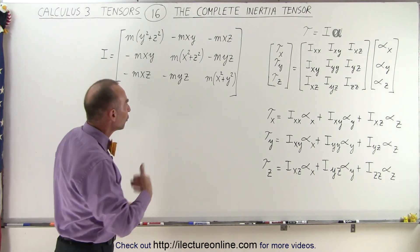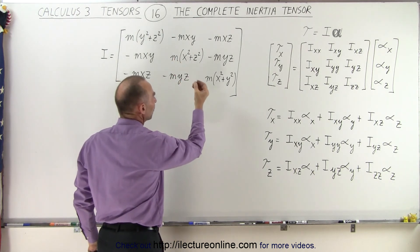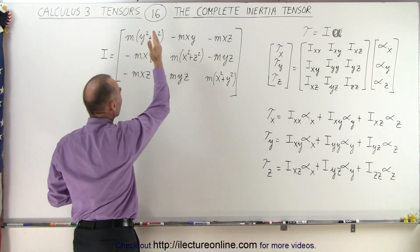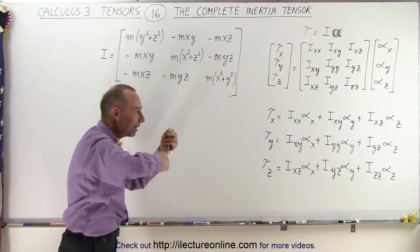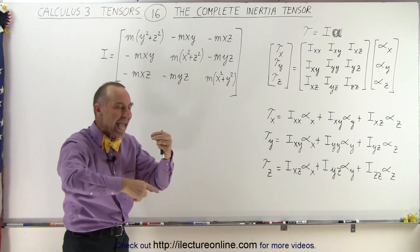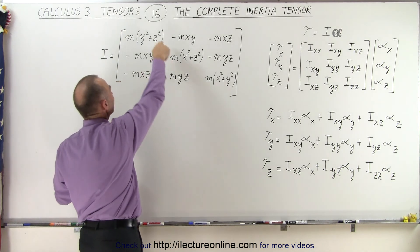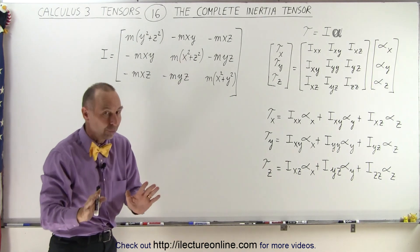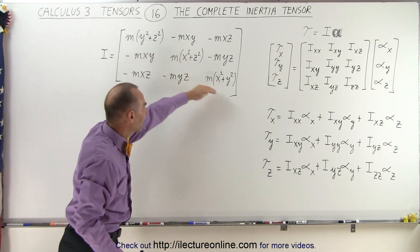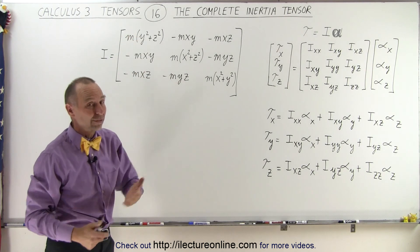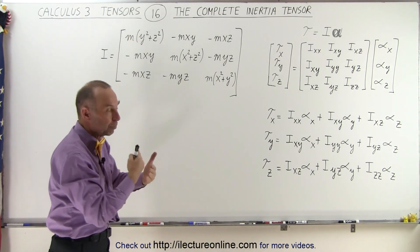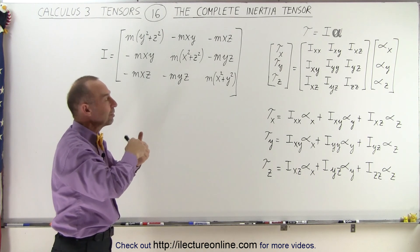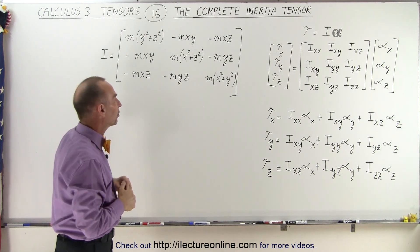What do those diagonal elements represent? They represent the moment of inertia when we're applying a torque in the x, y, and z directions, which will then result in an angular acceleration around the x-axis, the y-axis, and the z-axis — provided that those diagonal element terms are not equal to zero.